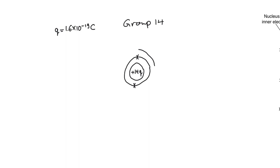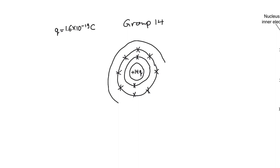There are two electrons in the first orbit and eight electrons in the second orbit — the numbers that make those orbits chemically stable. That accounts for 10 electrons, so in the final orbit we have four electrons. The number four in the last orbit is unstable, so the atom wants to find a way to make the number of electrons in the final orbit eight, like the second orbit.